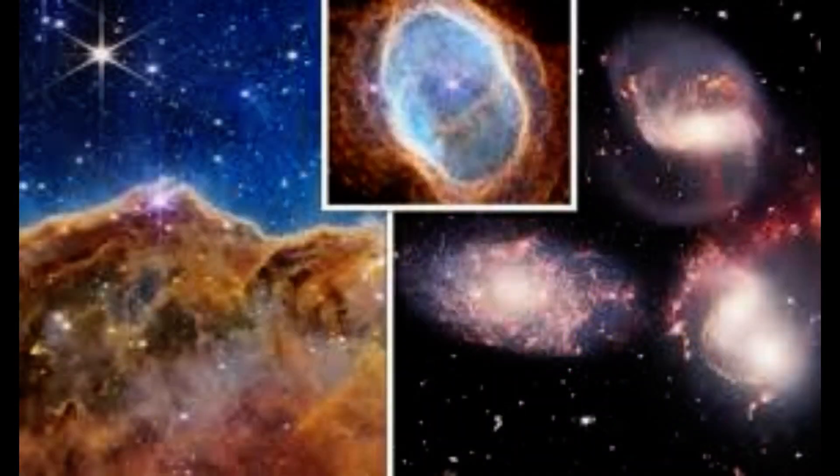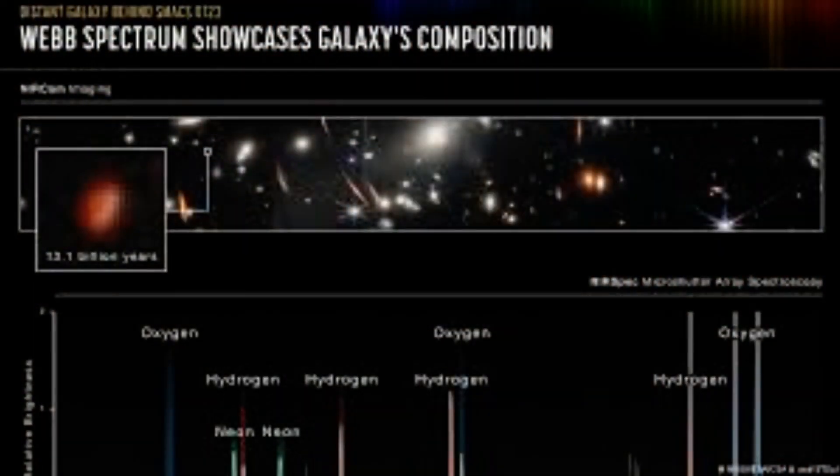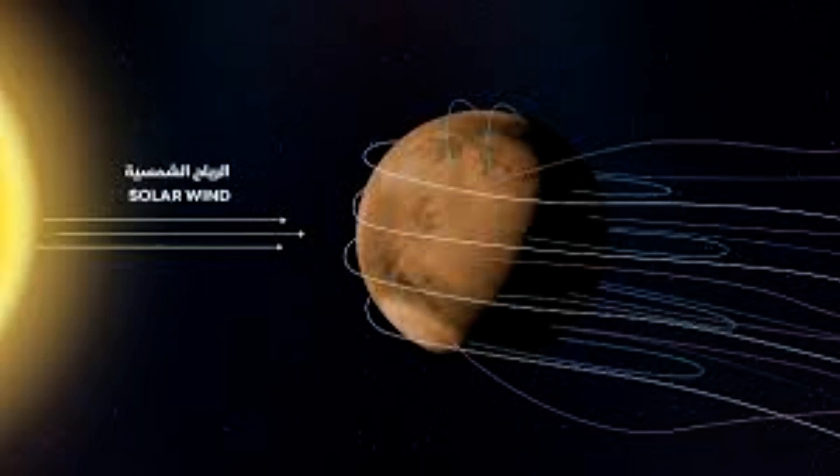Villanueva and his team also released Webb's first near-infrared spectrum of Mars, which shows minute variations in brightness between hundreds of different wavelengths. Preliminary analysis of the spectrum shows a rich set of spectral features that contain information about dust, icy clouds, what kind of rocks are on the planet's surface, and the composition of the atmosphere.